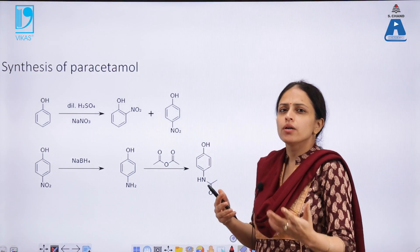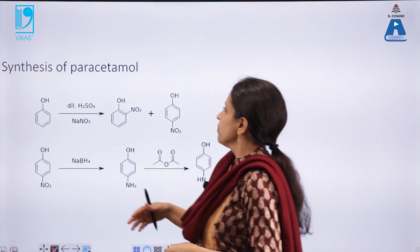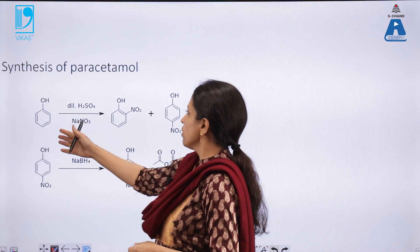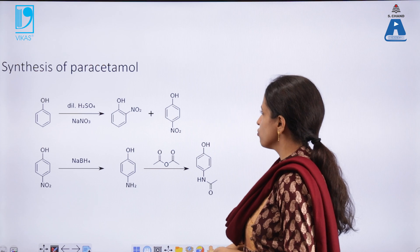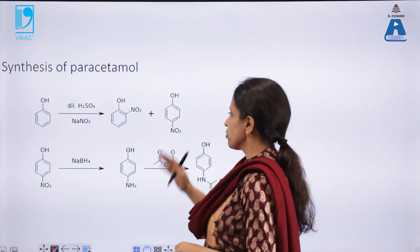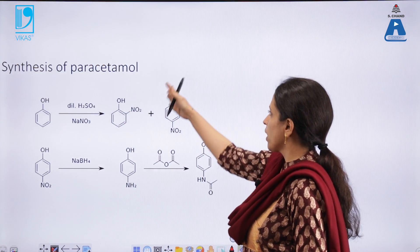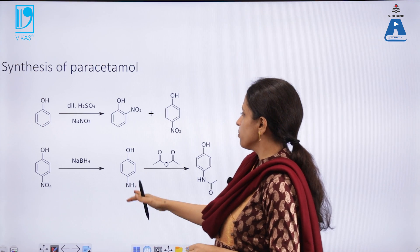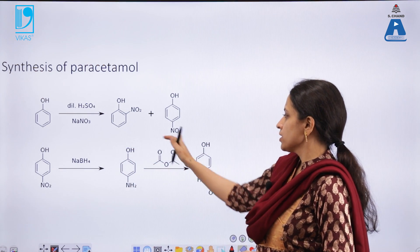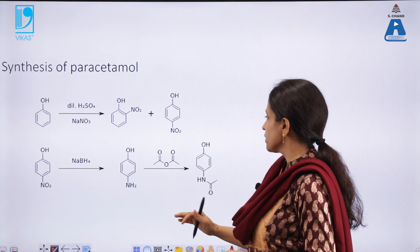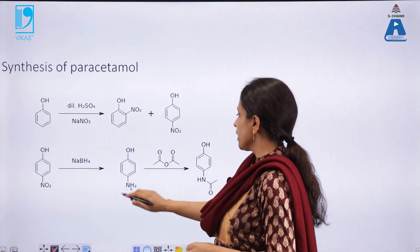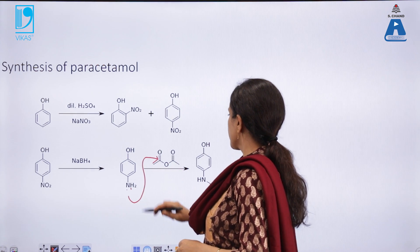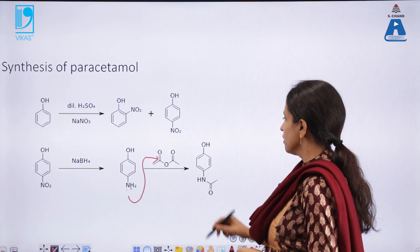Another important antipyretic and analgesic drug used in households is paracetamol, sold under various names such as Advil in different countries. It can be synthesized by reacting phenol with dilute sulfuric acid and sodium nitrite to give ortho-nitrophenol and para-nitrophenol, which are separated to obtain the para-nitrophenol component. Reduction gives para-aminophenol, which then reacts with acetic anhydride via acyl nucleophilic substitution — the NH2 group, being more nucleophilic, attacks the carbonyl center to give paracetamol as the product.